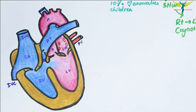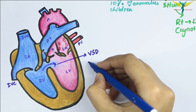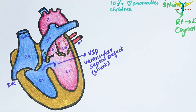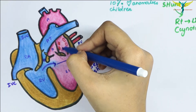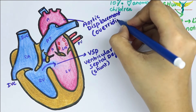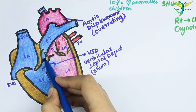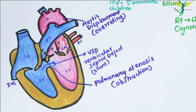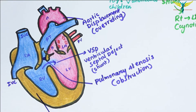The first condition in the tetralogy is the ventricular septal defect (VSD) — a defect in the septum of the ventricle, also called the shunt. The second feature is aortic displacement or overriding of the aorta over the VSD. The third feature is pulmonary stenosis — you can note the obstruction in the pulmonary trunk. The fourth feature is right ventricular hypertrophy, where the muscle of the right ventricle becomes hypertrophied.